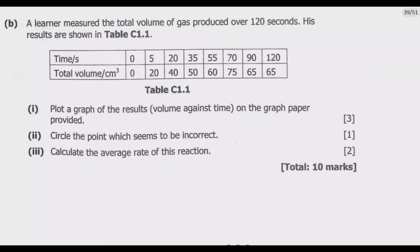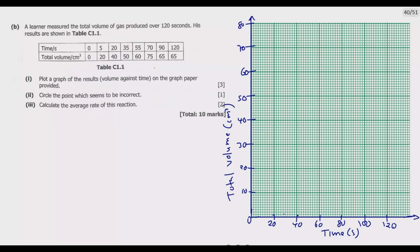For Question B, a learner measured the total volume of gas produced over 120 seconds; the results are shown in table C1.1. Time runs from 0 to 120 seconds and volume from 0 to 65 cm³. You need to plot a graph of volume against time on the graph paper provided, with volume on the y-axis and time on the x-axis. Loma N2 asks you to circle the point which seems incorrect, and Loma N3 asks you to calculate the average rate of reaction.